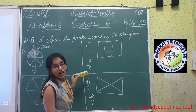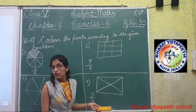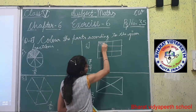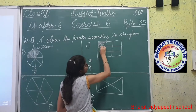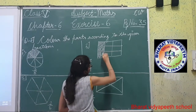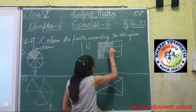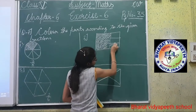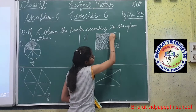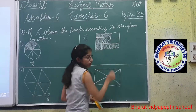Now see the second one: 7 by 9. Total number of parts: 9. Shaded part: 7. We shade 7 parts: 1, 2, 3, 4, 5, 6, 7. Clear?